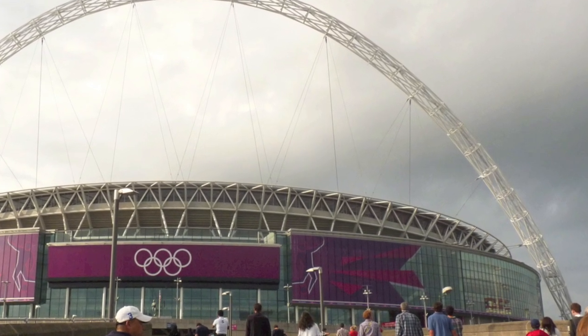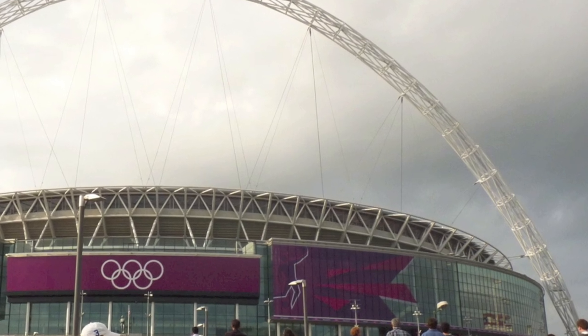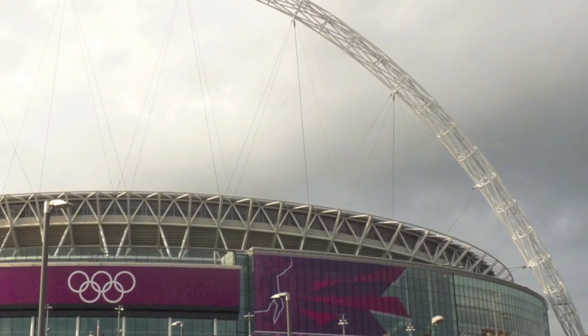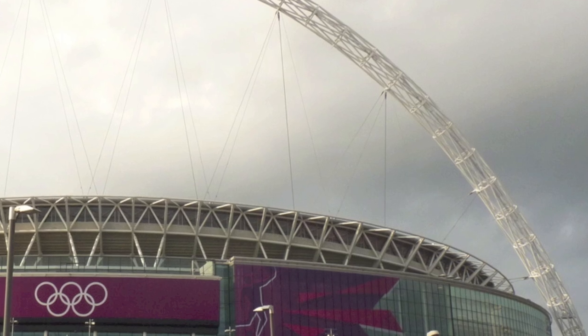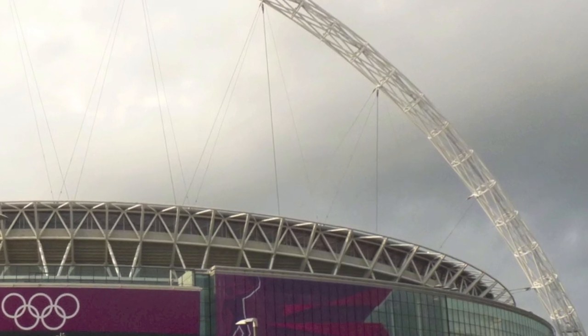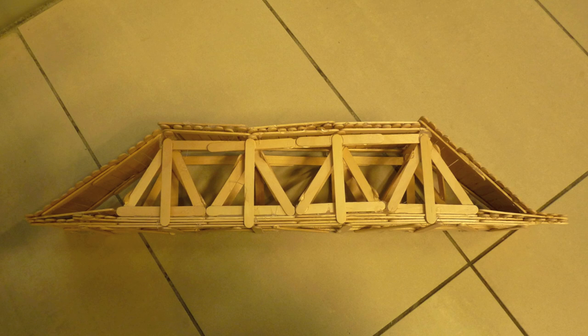Here we have the Wembley Arena. The circle around the top is a triangle. The arch around the top is made up of triangles. They're everywhere. And architects know that this is a strong choice. So that's why I recommend this in popsicle stick bridges.